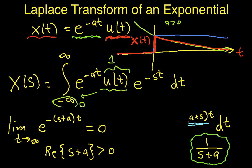Because if the real part of (s plus a) is greater than 0, t is greater than 0, so the product of the real part of (s plus a) times t will be greater than 0. So, I multiply that by a negative sign, and that then says that as t gets really big, this gets really close to 0.